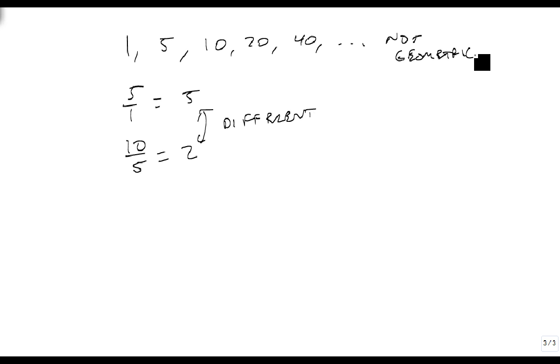Now, what about the sequence 1, 5, 10, 20, 40, dot dot dot? Well, 5 divided by 1 is 5, but 10 divided by 5 is 2. Since these are different, this is not geometric. And so we don't even bother coming up with its general form.